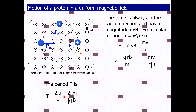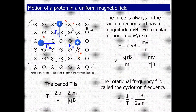Substituting the velocity value, the time period becomes T = 2πm / (qB). From this, we can find the rotational frequency, called the cyclotron frequency. The cyclotron frequency is f = 1/T = qB / (2πm).